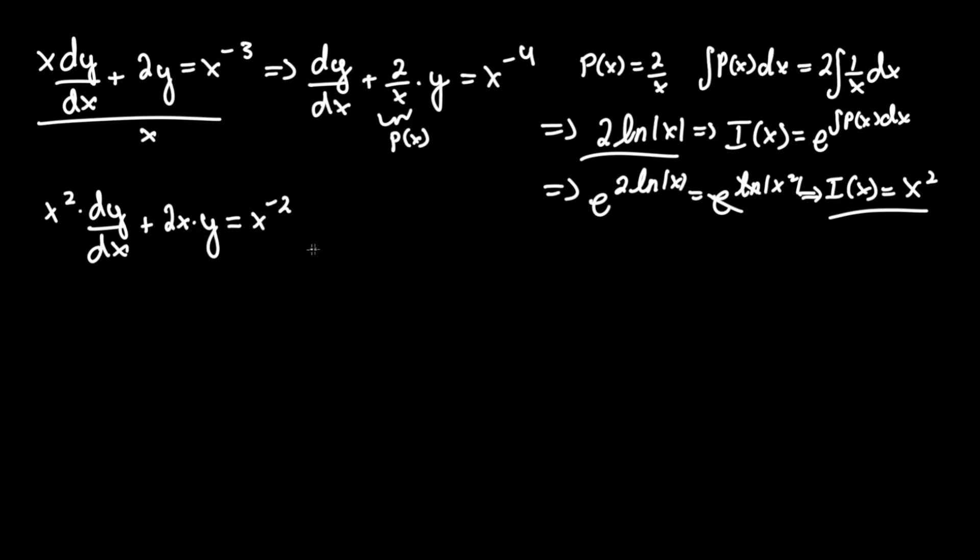Using the product rule, d/dx of the integrating factor x^2*y equals whatever's on the right side, x^(-2). You can check this is correct: the derivative of x^2 is 2x, multiply by y, then add x^2*dy/dx, the derivative of y with respect to x, and that is correct.